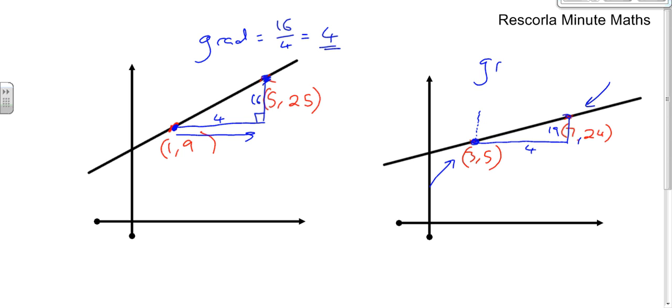So the gradient equals 19 over 4. And that's it. And that's how we leave it. And that's how you find the gradient of a line.